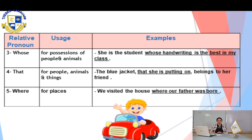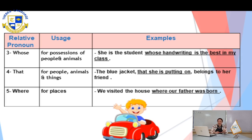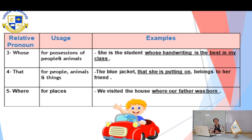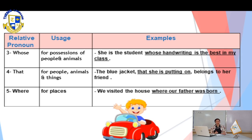Let's go to the fourth relative pronoun: 'that.' We use 'that' to refer to people, things, and animals — yes, we use it for all three. For example: 'The blue jacket that she is putting on belongs to her friend.' Where is the noun? 'Jacket.' Where is the relative pronoun? 'That.' And where is the relative clause? 'That she is putting on.' This is great.